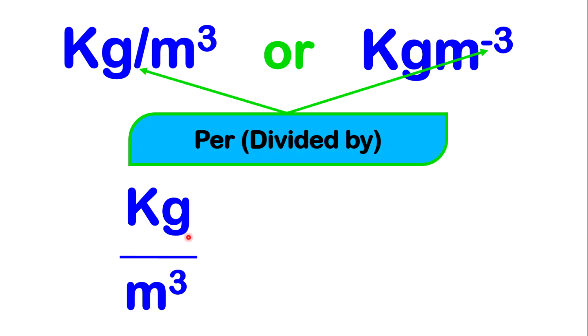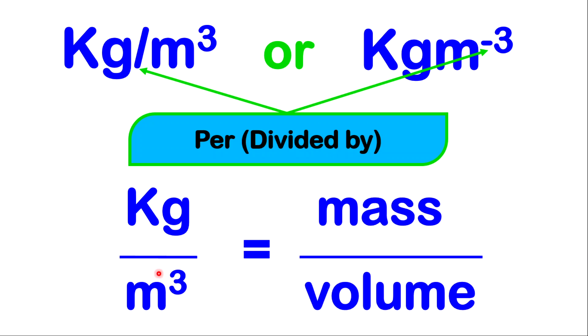Then, from this, we know that the quantity that kilograms represent is mass and the quantity that is represented by meters cubed is volume. Then, we know that from this unit, that density is equal to mass over volume.